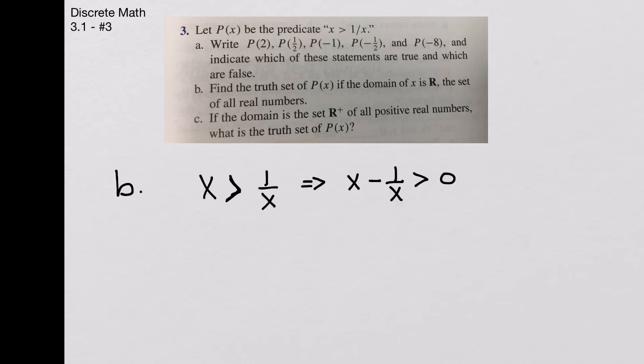And now I can multiply the x that I have here by x over x, and that gives me a common denominator. So then I have x squared minus 1 over x is greater than 0. And I'll factor: x minus 1 times x plus 1 over x is greater than 0.